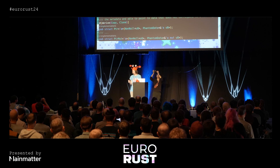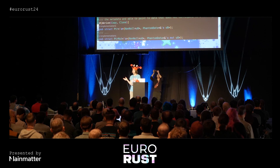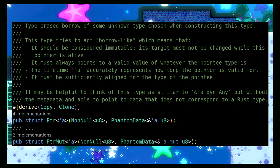One nice thing about having these abstractions is that it gives a place to put documentation, both on the actual type itself. If the reason for using unsafe code is very complicated, you have a nice place to put the documentation. In this case it's not really that complicated, so the documentation here mostly just exists to explain the type rather than anything more interesting.